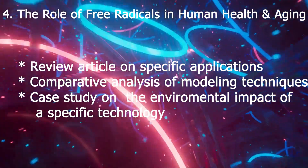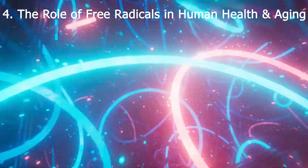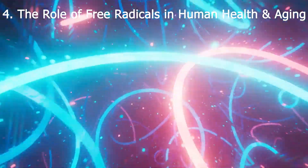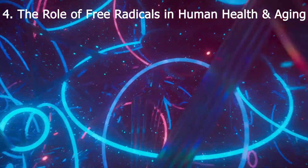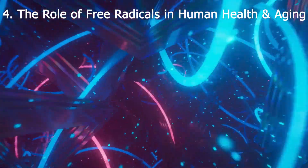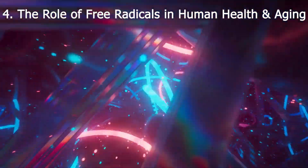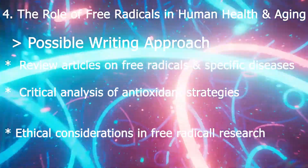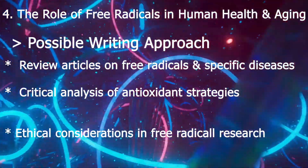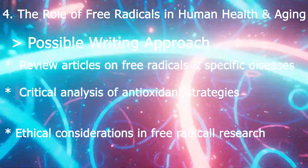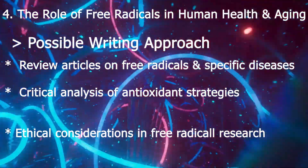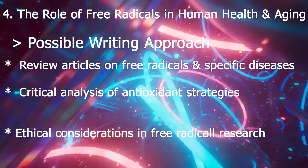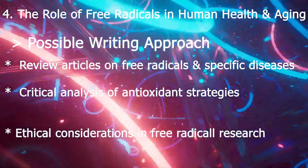The next seminar topic to consider is the role of free radicals in human health and aging. When approaching this topic as an undergraduate, your writing expectations generally depend on your supervisor's instructions and the overall goal of the assignment. One possible approach is a review article on free radicals and specific diseases — focus on the role of free radicals in one specific age-related disease such as cardiovascular disease, neurodegenerative disease, or cancer. Conduct research highlighting the specific free radical mechanisms involved, current research in prevention and treatment, and potential future directions.